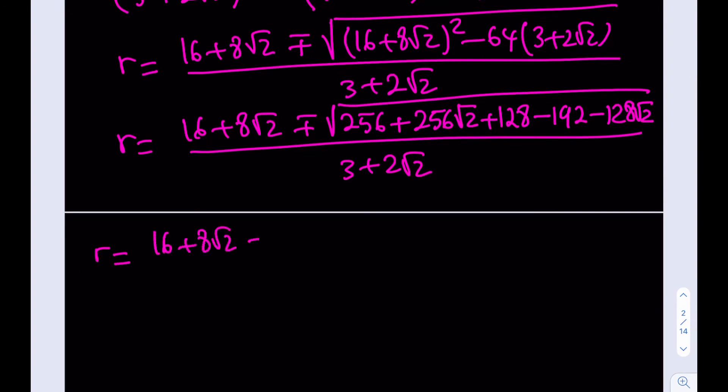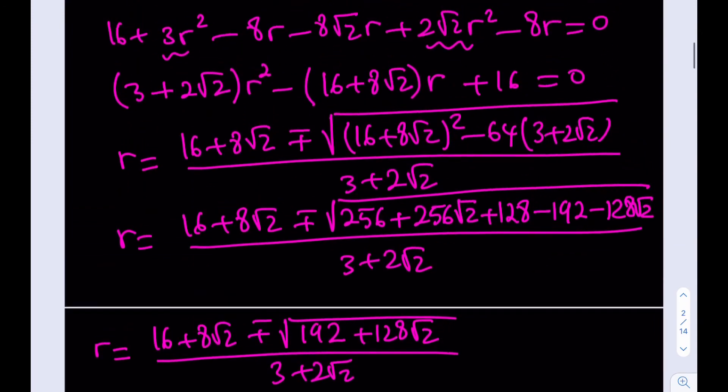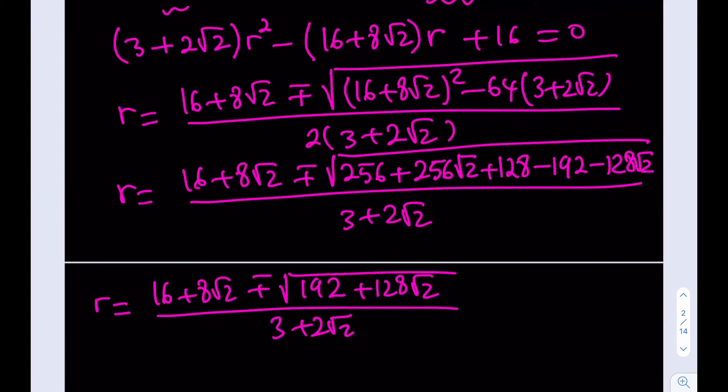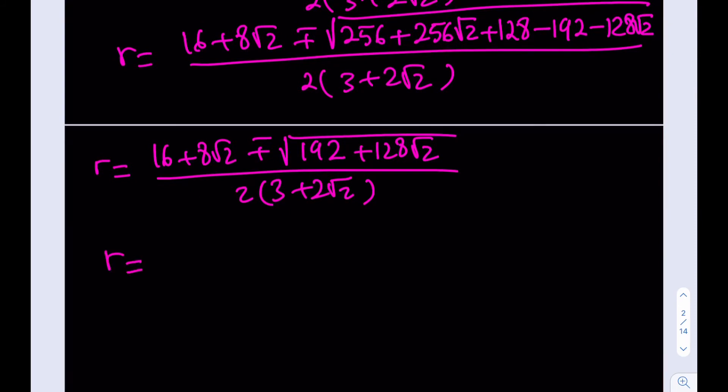Again, 16 + 8√2 plus minus still. How do you square that (a + b)²? 16² plus 2ab is going to give me 16 times 16 again. Plus 8√2 squared is 64 times 2, which is equal to 128. Minus 64 times 3, which is 192. Minus 64 times 2, which is 128√2. Radical inside radical, right? All divided by (3 + 2√2). Don't worry. This is going to simplify. 16 + 8√2 plus minus, I'm going to keep that until the end. 256 minus 192 is 64. 64 plus 128 is 192. 256 minus 128, that's going to give me 128 times √2. And all of that is divided by (3 + 2√2).